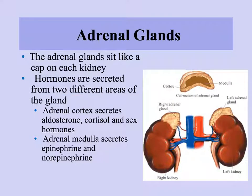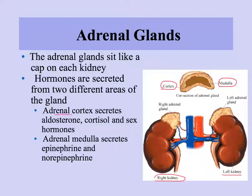The adrenal glands are found on both kidneys — a right and left adrenal gland. Each has two parts: the cortex on the outside and the medulla in the center, each producing different hormones. The adrenal cortex produces steroid-based hormones — aldosterone, cortisol, and sex hormones — whereas the adrenal medulla secretes non-steroid hormones epinephrine and norepinephrine.